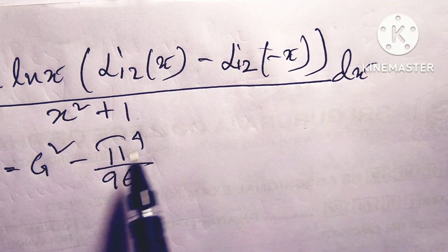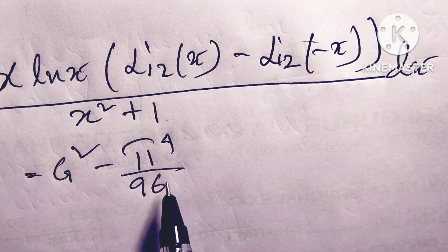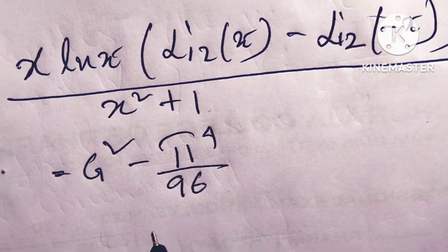So friends, this value is equal to G² divided by π⁴, times 1/96.